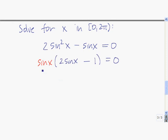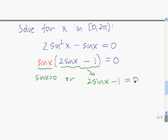The first thing you're going to do is factor out the sine of x because sine of x is common to both terms. Then you set each factor equal to 0, and you take the second equation and isolate sine of x. So the solutions to the equation are the solutions to sine of x equals 0 and the solutions to sine of x equals 1 half.